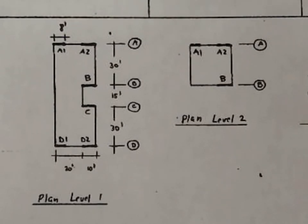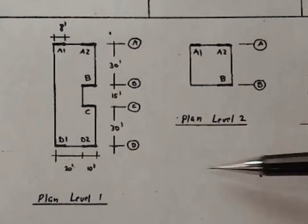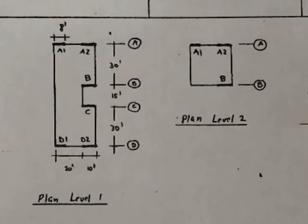The upper level has shear walls in the same locations where it's possible to put them in, so A1, A2, and B right here, but there's no structure over here. It's a balcony or something like that.